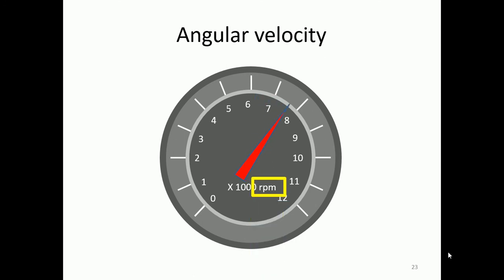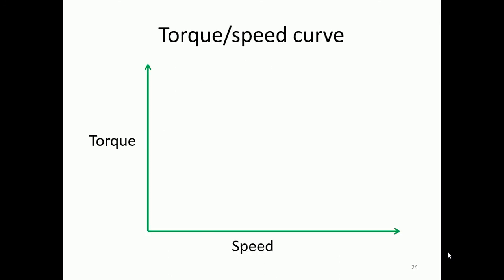So revolutions per minute as you can see. And now you will see we've got torque on the one side, we've got speed at the bottom and at the maximum speed, you will have no torque anymore. So it cannot go to a higher speed because there's no torque to make it go to a higher speed. So then you reach a maximum speed.